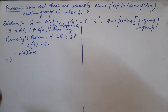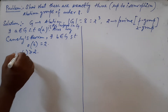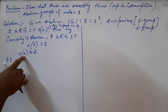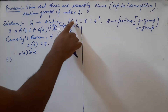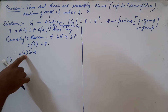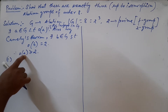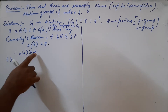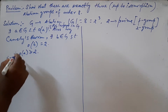Now, three cases arise. We know that the order of an element divides the order of the group, and order of A is greater than or equal to 2. So order of A may be 2, 4, or 8.